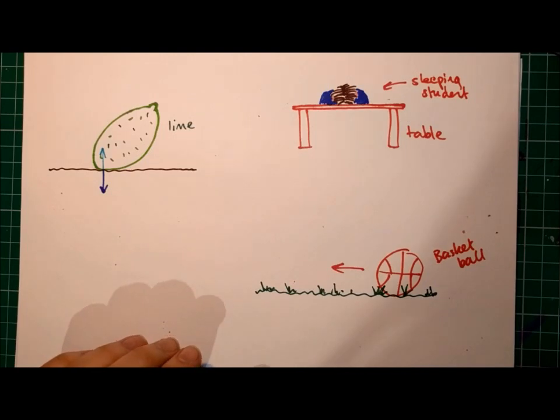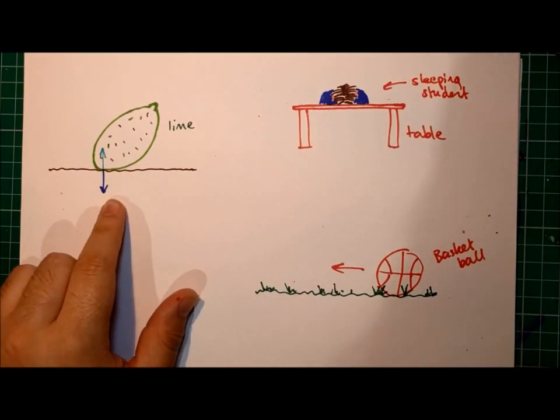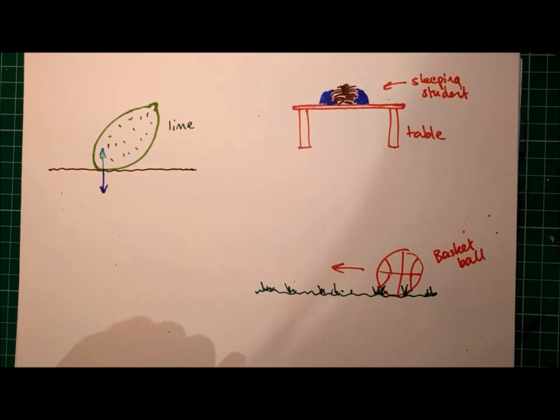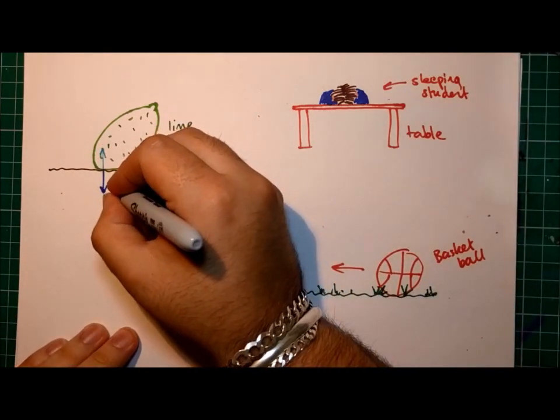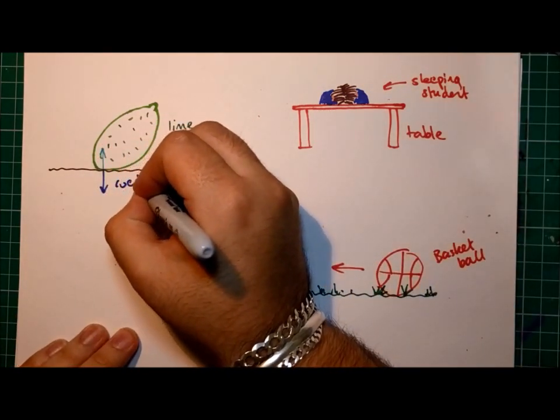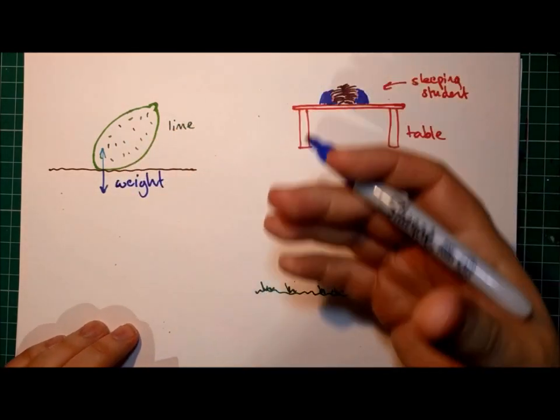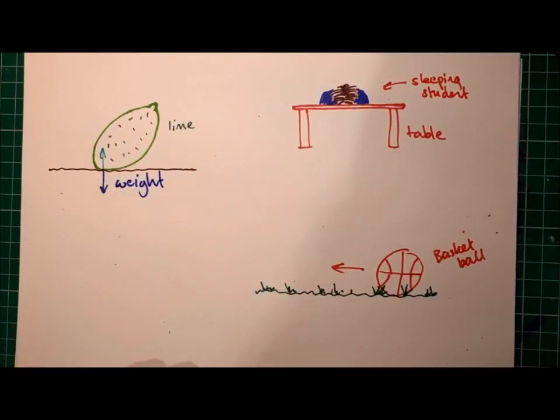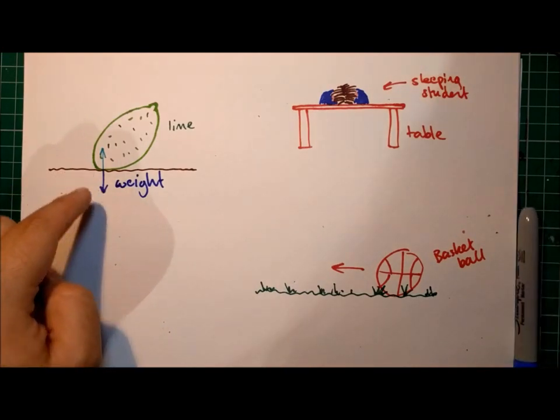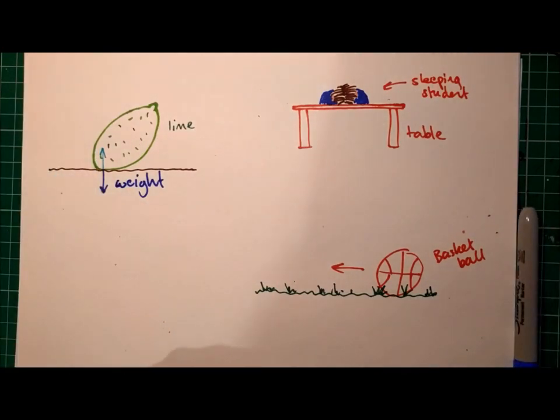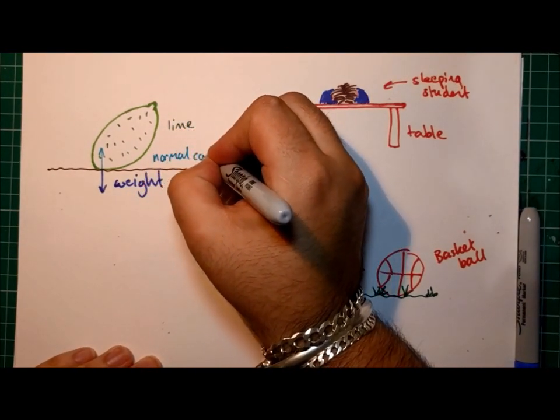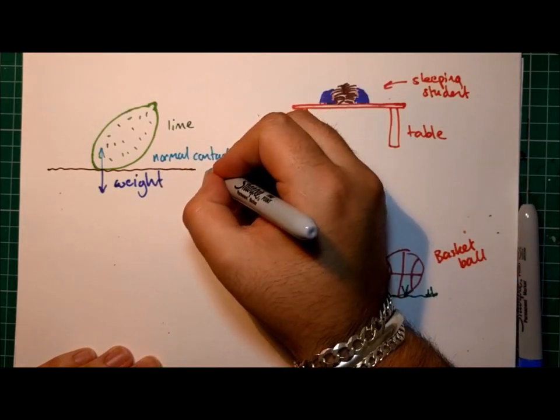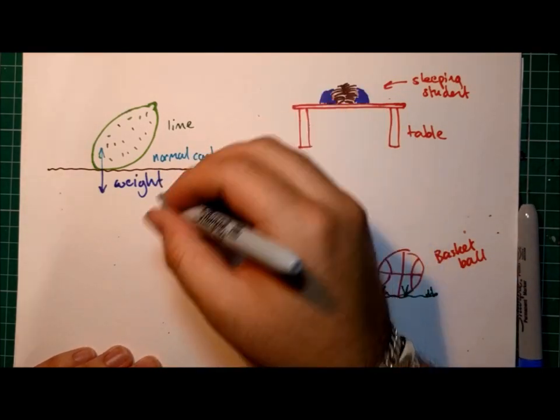Just to run through some examples of the normal contact force. Here we have a lime. You can see the blue line we have here is representing the force of weight. This is the force by which the lime is pulled down towards the ground because of gravity.